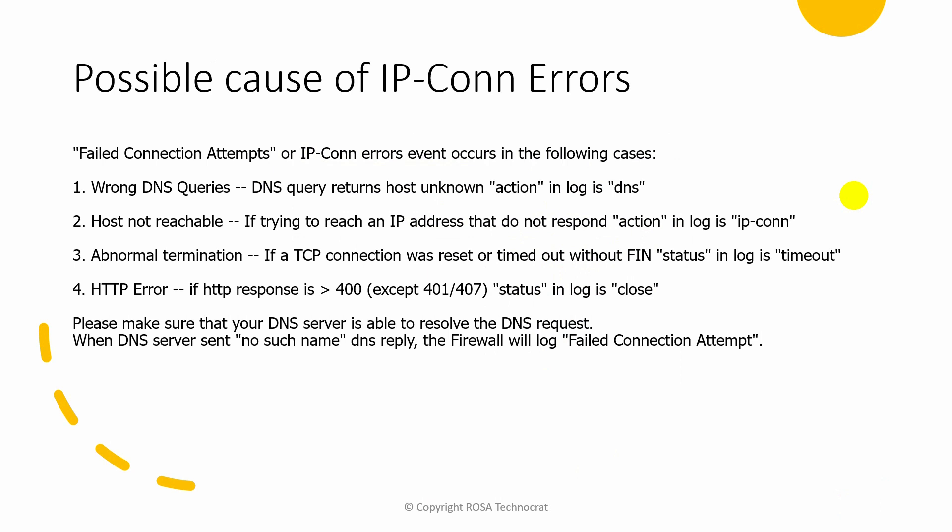The possible causes of IP connection error are: first, a wrong DNS query — for example, querying www.rosatech.com and the DNS server responds with 'host unknown,' in which case FortiGate gives a 'deny DNS error.' Second, host not reachable — if you try to reach an IP address that does not respond, the action will be 'IP connection error.' Third, abnormal termination of a TCP connection — if a TCP connection was reset or timed out without the FIN flag set, it results in a timeout.